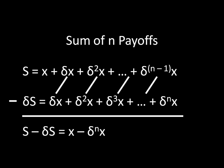The left side, S minus delta times S, is equal to what we have gotten on the right as a result of eliminating all of those overlapping terms. All we have left is an x and a minus delta to the n times x. That gets rid of all of that junk in between, and still preserves the equality.